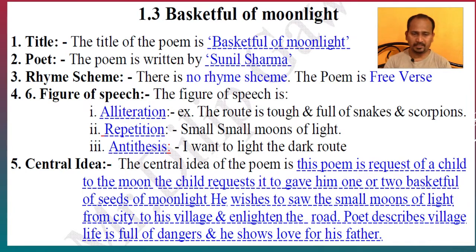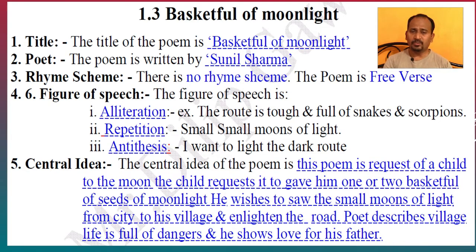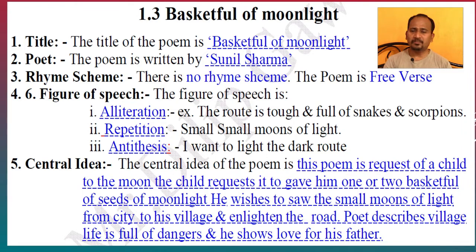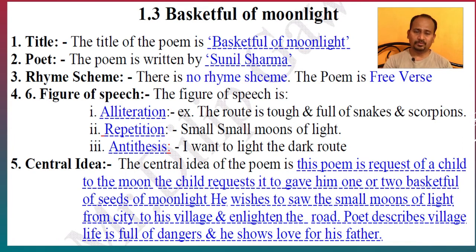Next point, Figures of Speech. The figures of speech are: 1. Alliteration — for example, 'The root is tough and full of snakes and scorpions.' 2. Repetition — for example, 'Small small moons of light.' 3. Antithesis — and the line is 'I want to light the dark root.'